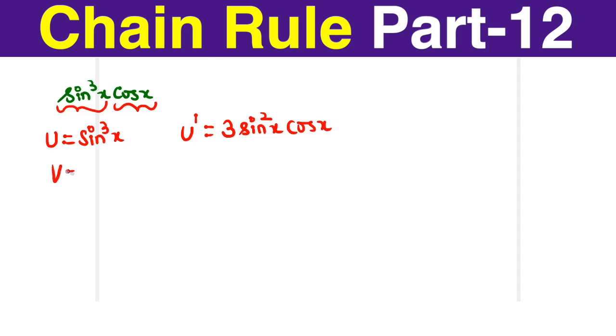Now, let us take the v. v is the cos x. Differentiation of cos x is minus sin x.